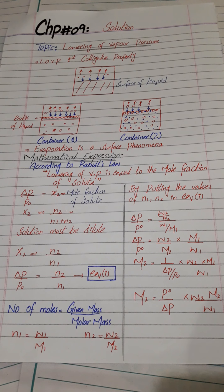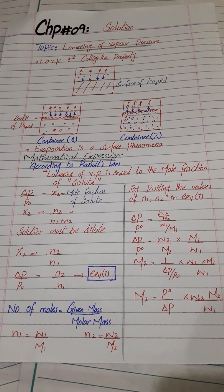Recalling from chapter 1, the number of moles equals given mass over molar mass. So n1 equals w1 over M1, and n2 equals w2 over M2. Substituting n1 and n2 into the equation, delta p over p0 equals (w2 over M2) divided by (w1 over M1). Rearranging the fraction gives us w2 times M1 over M2 times w1.